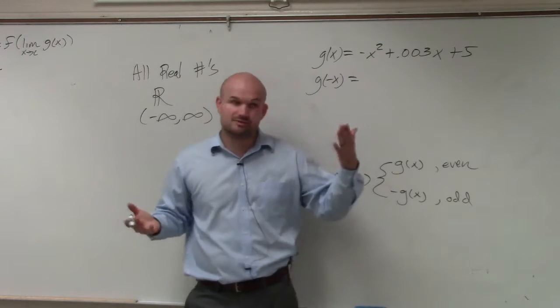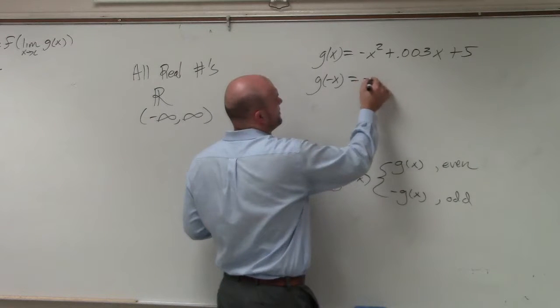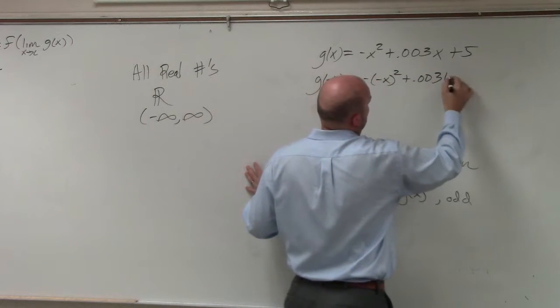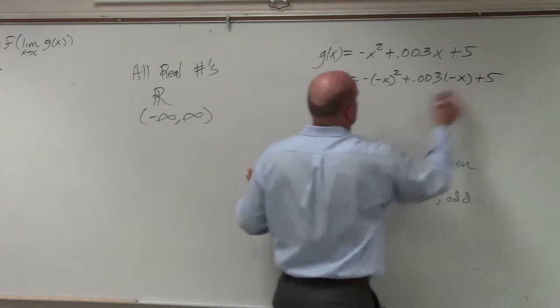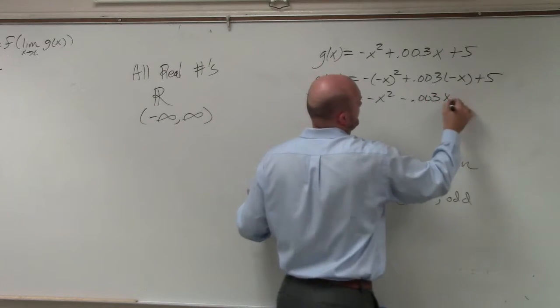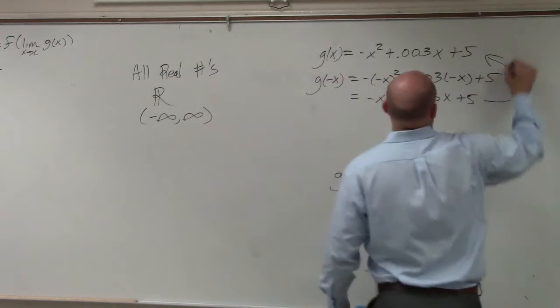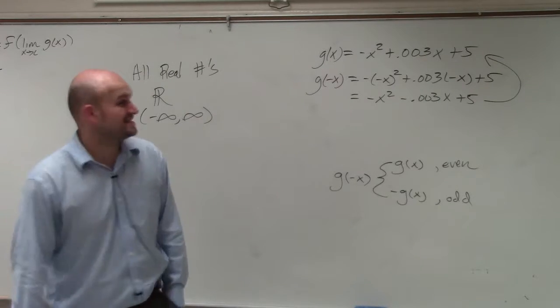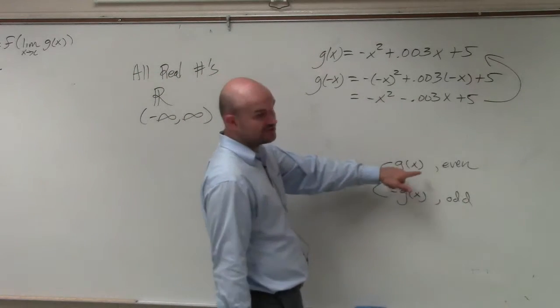You could always plug these in and check the symmetry, right? Well, anyway, so if I plug this in, negative x squared plus 0.003 times negative x plus 5, what we notice, ladies and gentlemen, is we do not have back our original equation, right? So it's not even. We don't get back the original equation.